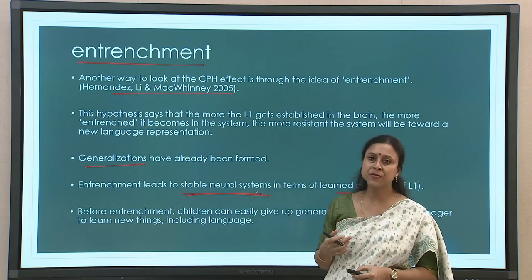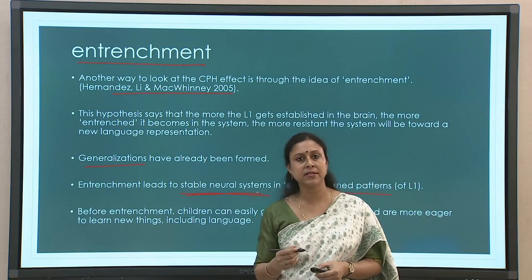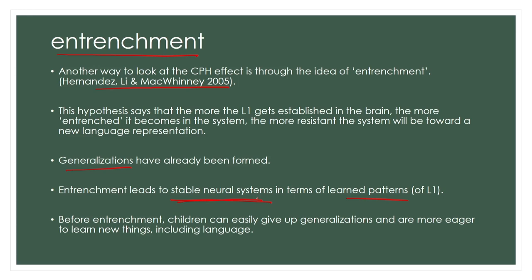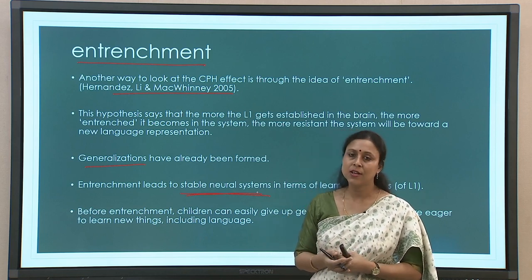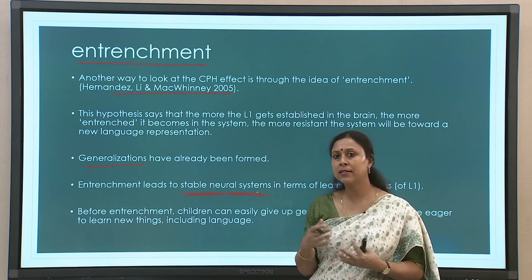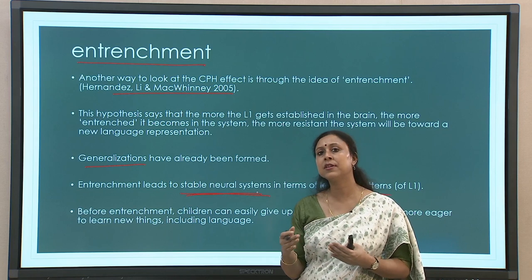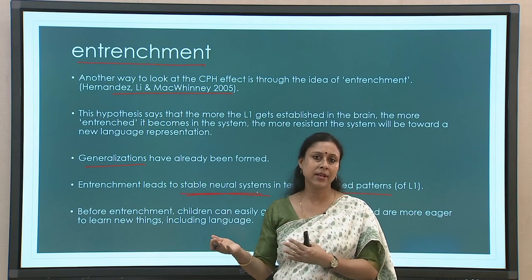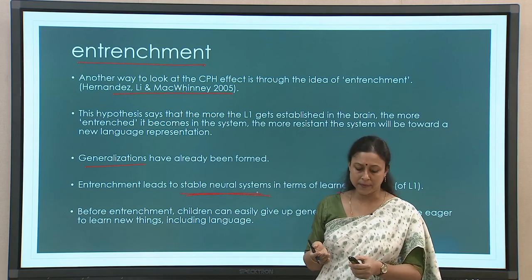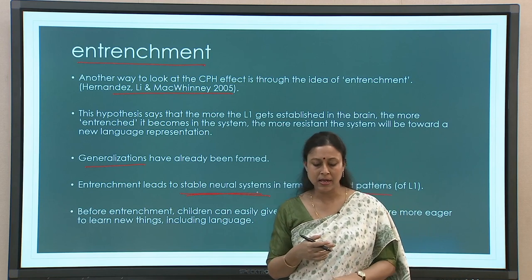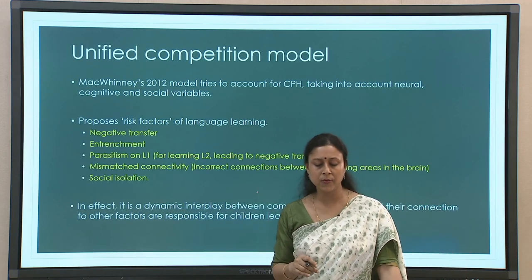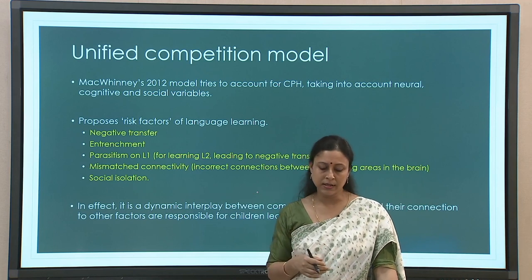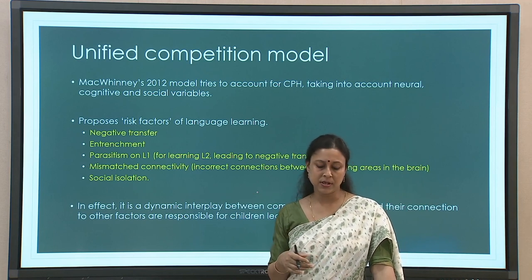Before entrenchment fully solidifies, children can easily give up generalizations because for small children the entrenchment is not yet strong — it is going through the process but has not yet been strengthened. So they can easily adapt to new patterns. This does not happen once you get older, and that is a very important point in the critical period hypothesis literature.